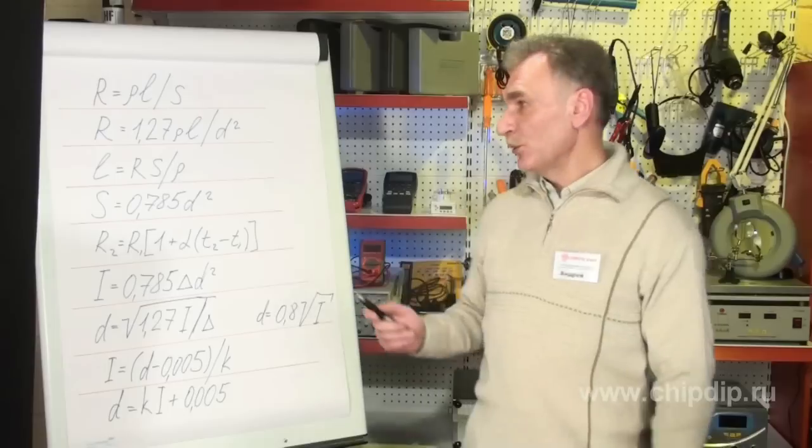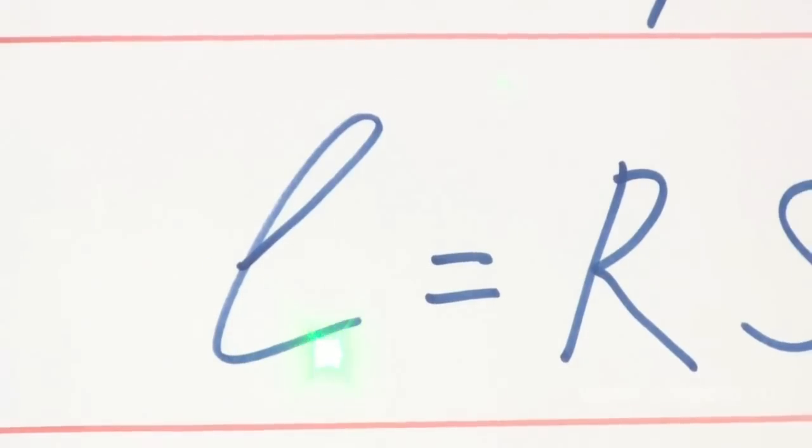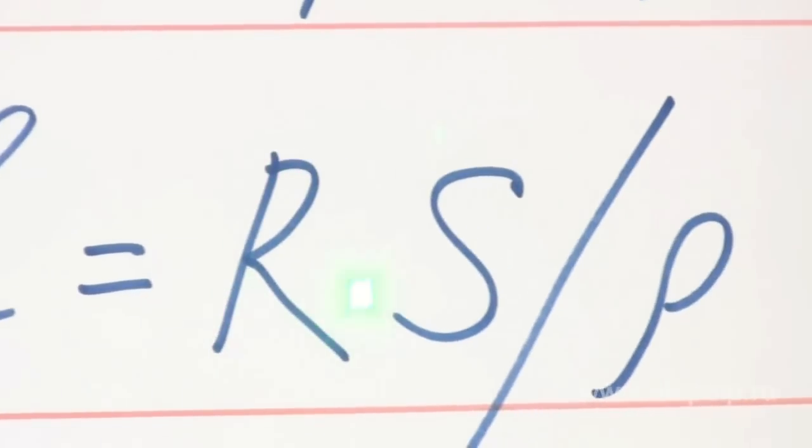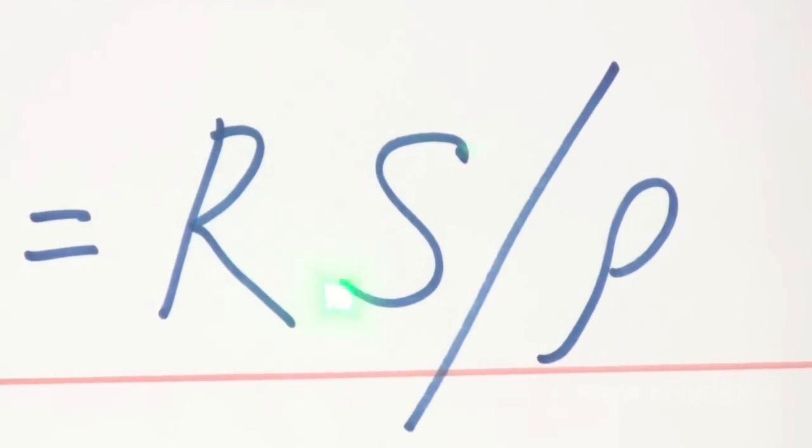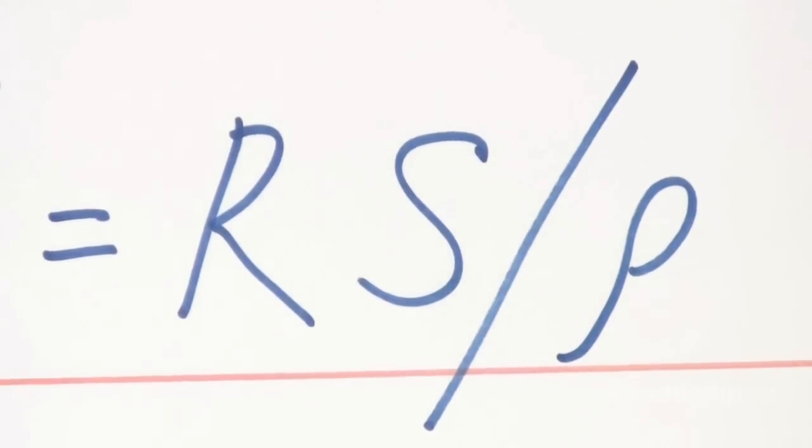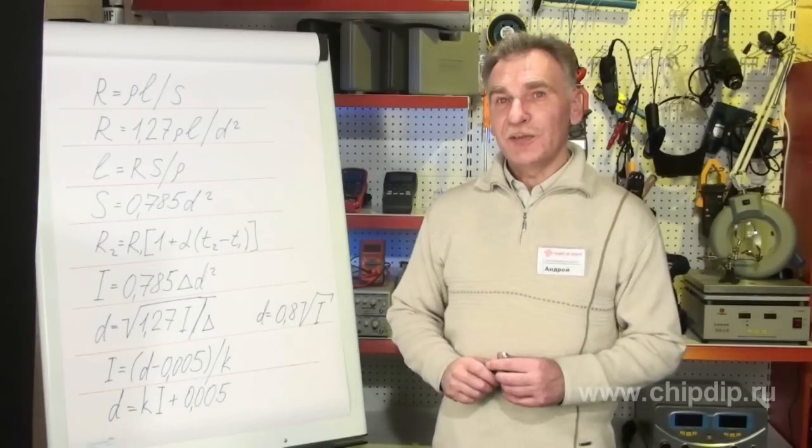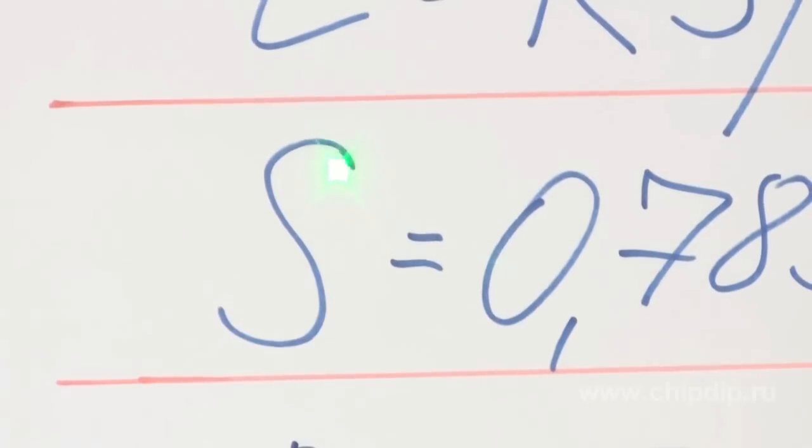Generally, respected handbooks contain metal-specific resistance. Thus we calculate the cable length based on these expressions using the following formula: L equals RS divided by P, or L equals 0.785RD squared divided by P if expressed in terms of diameter.